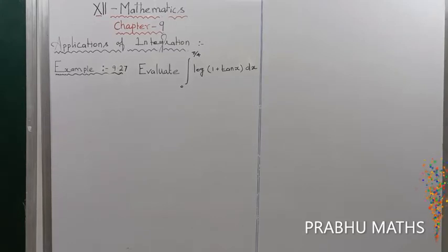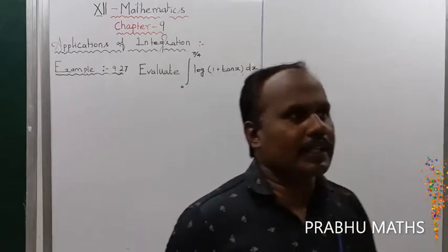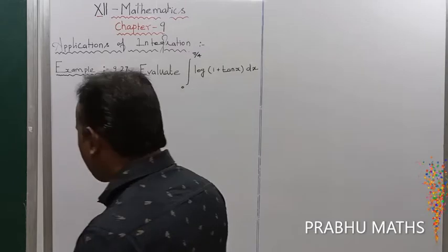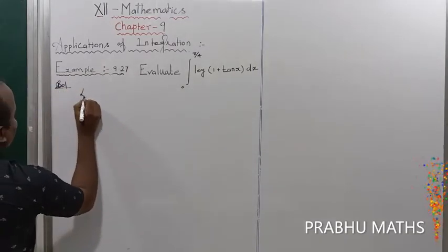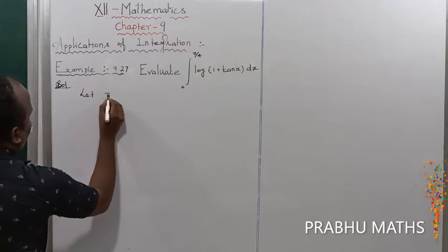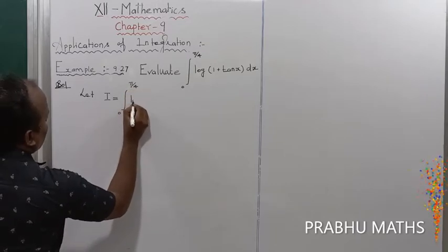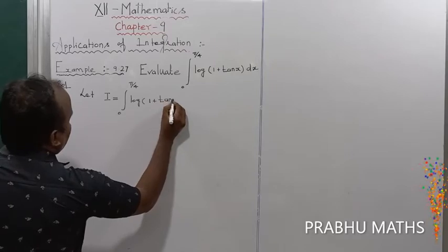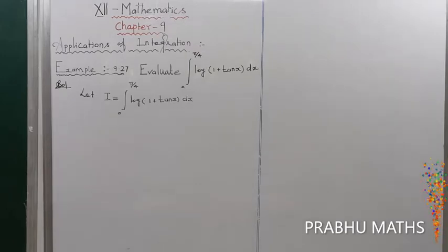Example 9.27: Evaluate the integral from 0 to π/4 of log(1 + tan x) dx. Let us consider I equal to the given integral, which is from 0 to π/4 of log(1 + tan x) dx.